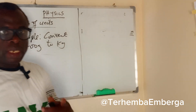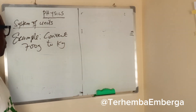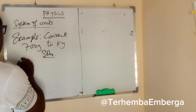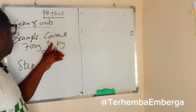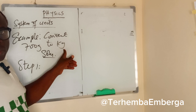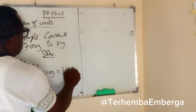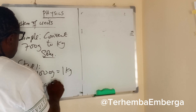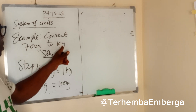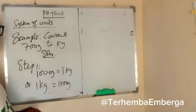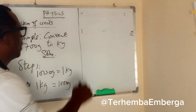Convert 700 grams to kg. Step 1: what is the relationship between grams and kg? We know that 1000 grams is equivalent to 1 kg, or 1 kg is equivalent to 1000 grams. In this case we are converting from a small to a big unit, hence we divide 700 by 1000.